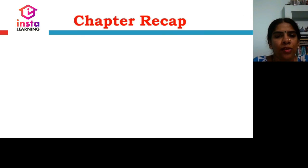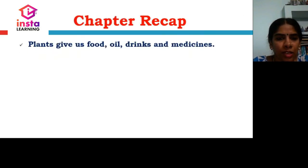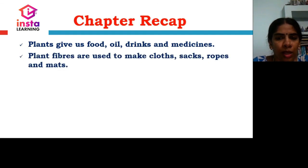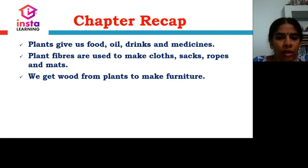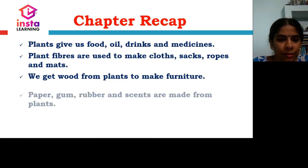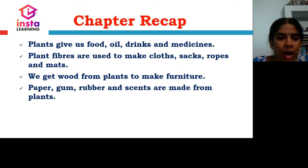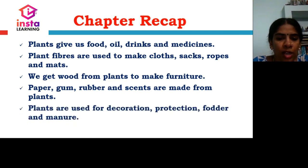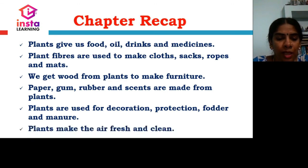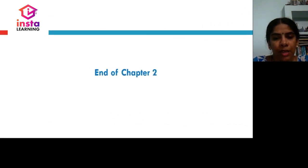Let us have a chapter recap. Plants give us food, oil, drinks, and medicines. Plant fibers are used to make cloths, sacks, ropes, and mats. We get wood from plants to make furniture such as chairs and tables. Paper, gum, rubber, and scents are made from plants. Plants are used for decoration, protection, fodder, and manure. Plants make the air fresh and clean. This completes our Chapter 2.